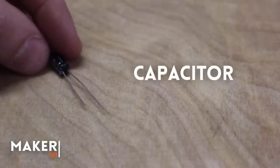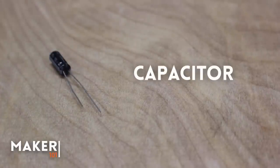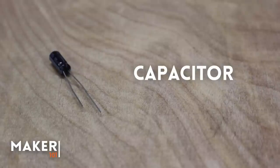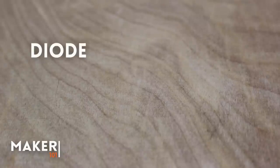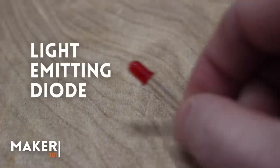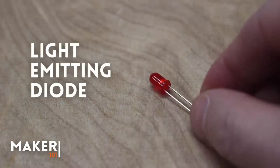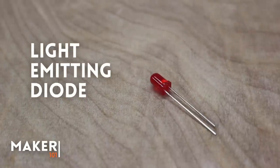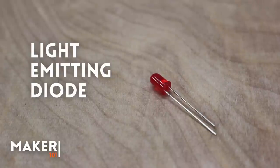This is a capacitor. It builds up and stores a charge for a short amount of time. Some capacitors do have a positive and negative lead, so you have to make sure that you hook it up correctly. A diode only lets current flow in one direction. You may recognize this light-emitting diode, or LED — it just lights up when current passes through it.